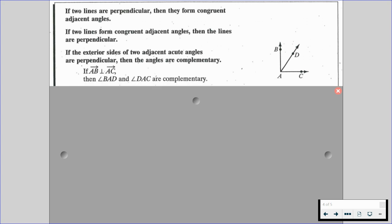So if we have ray AB is perpendicular to ray AC, then angle BAD and angle DAC are complementary. Because if we have two rays that are perpendicular to each other, that means they form a right angle, and we know right angles have a degree measurement of 90 degrees. Therefore, the two angles that are formed are going to be complementary.